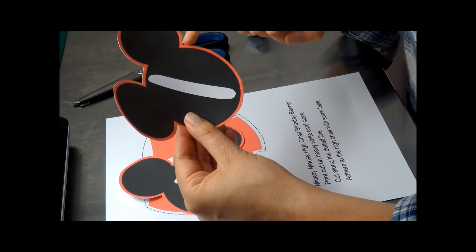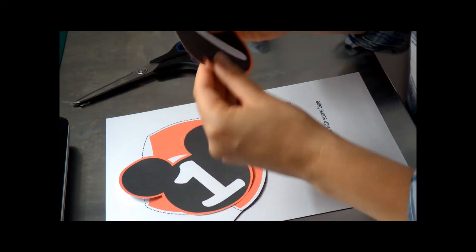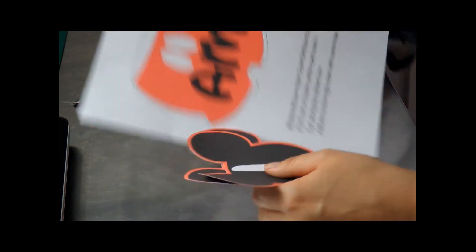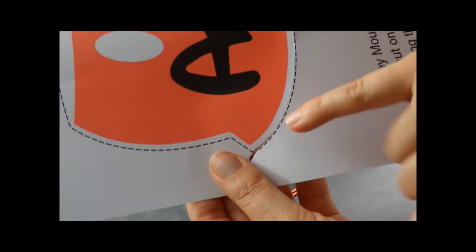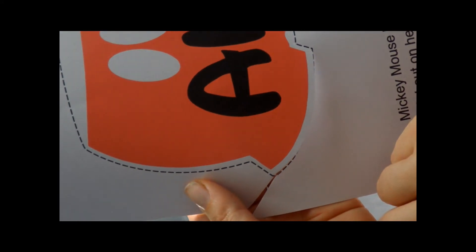You're going to cut along the image all the way around and when you cut out his pants try and cut on the inside of the dotted line. That way it gives you a cleaner finish.